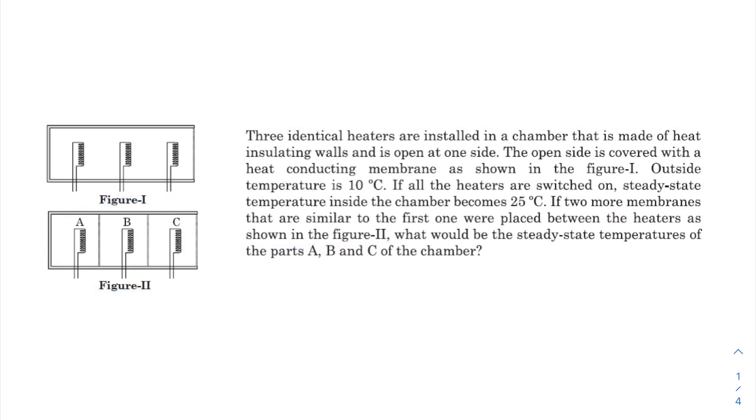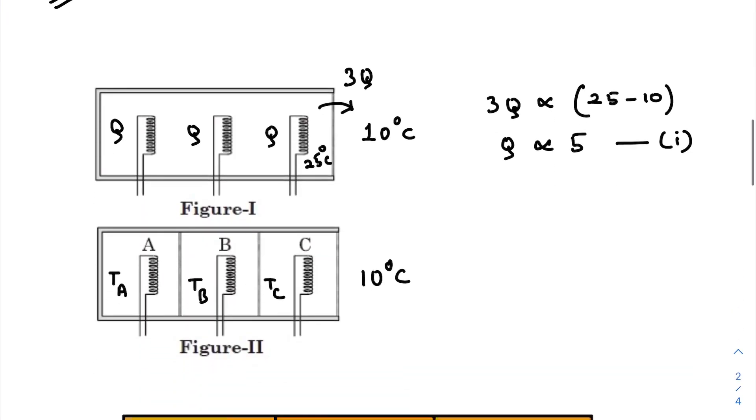So let's come to our solution. In the initial one, when the whole structure is covered with insulating walls from all sides except this one, so this is the heat conducting membrane. When all these three heaters are turned on simultaneously, each heater emits same amount of heat per unit time. Let Q be the amount of heat emitted by each heater per unit time.